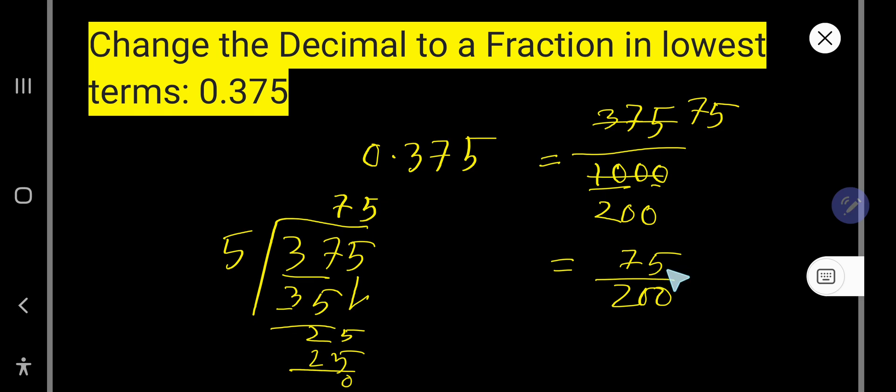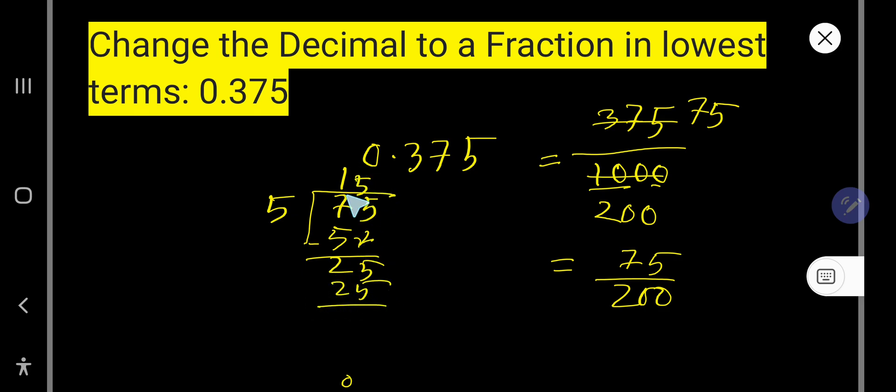Now this number also has 5 in the units place, so this is also divisible by 5. So if you divide this 75 by 5... 5 goes into 7 one time, 1 times 5 is 5. If you subtract you are getting 2. 5 goes into 25 five times, that is 15.